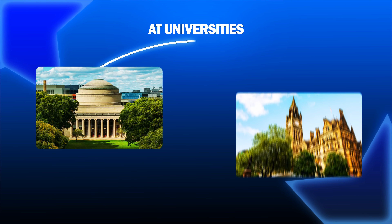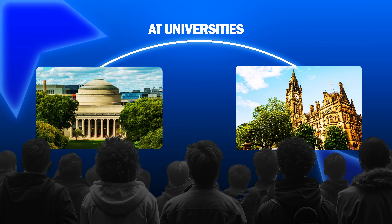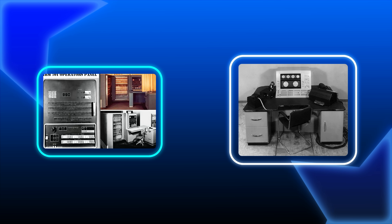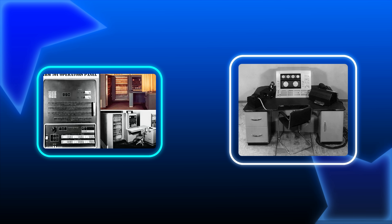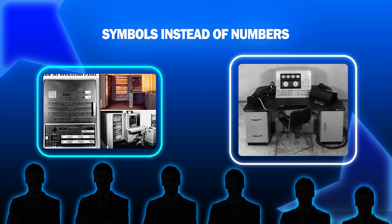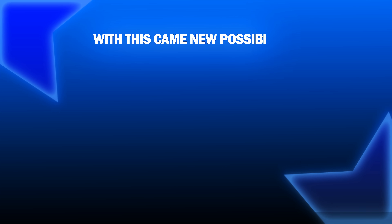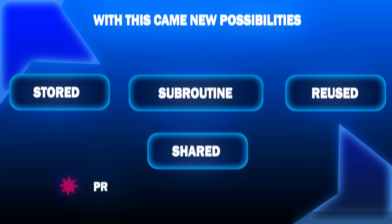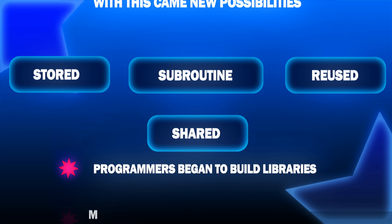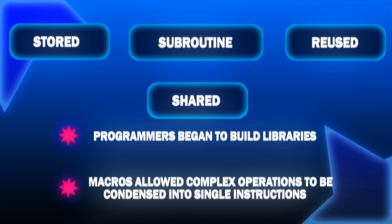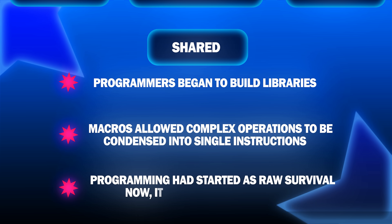At universities from MIT to Manchester, programmers embraced symbolic languages tailored to their hardware. Each machine had its own dialect, but the principle was the same — symbols instead of numbers. Programs that could be read and understood by humans. With this came new possibilities: subroutines could be stored, shared, and reused. Programmers began to build libraries. Macros allowed complex operations to be condensed into single instructions. Programming had started as raw survival; now it was becoming a craft.